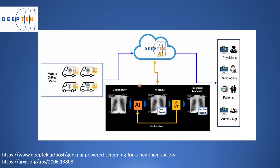The first use case is the application of an AI algorithm for screening of X-rays. DeepTek is a company working in the field of healthcare. They have a solution called Genki, which addresses the need for using AI tools for population screening for diseases such as tuberculosis and COVID-19.